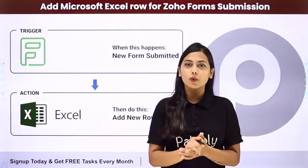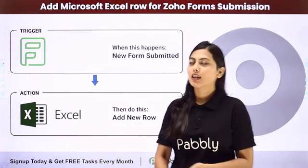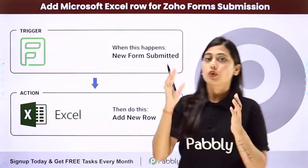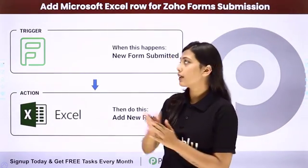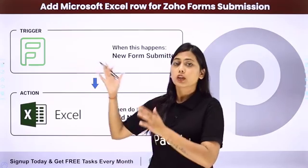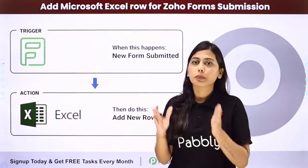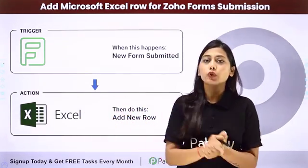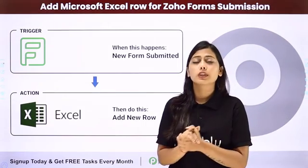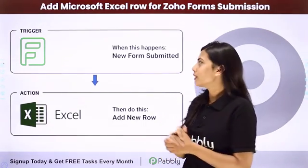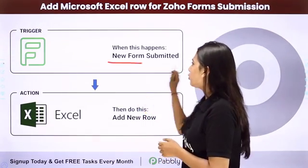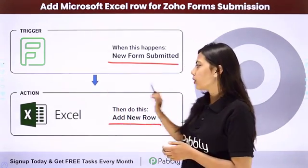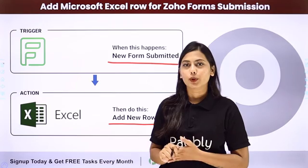Hello everyone. In this video we are going to learn how to add a Microsoft Excel row for a Zoho form submission. Every time a form is submitted that you have created using Zoho Forms, you will get the complete entry recorded in your Microsoft Excel workbook. You can do this by creating an automation with Pabbly Connect, where the trigger will be a new form submission from Zoho Forms and the action will be adding a new row in the Microsoft Excel workbook.